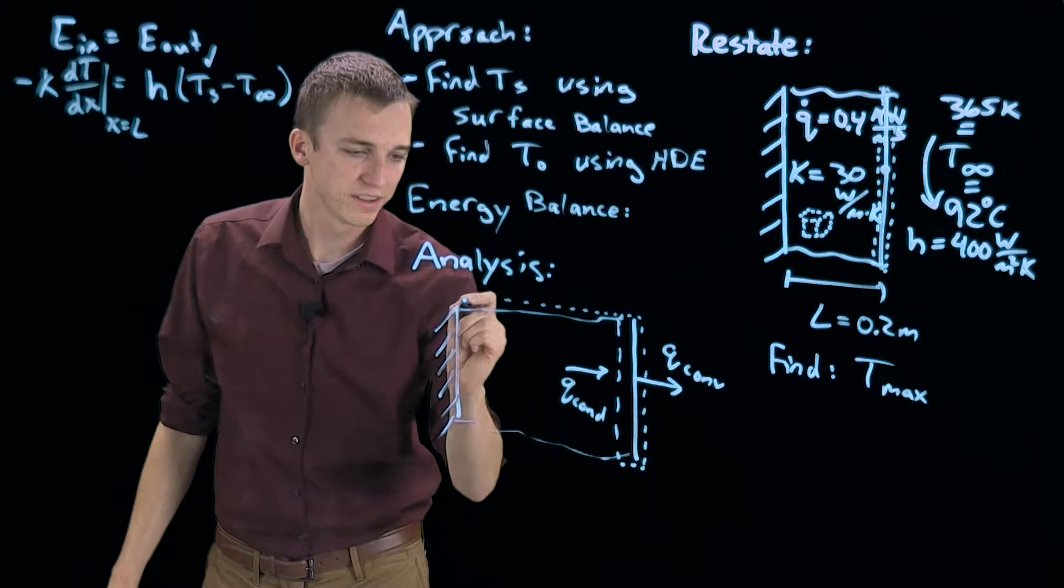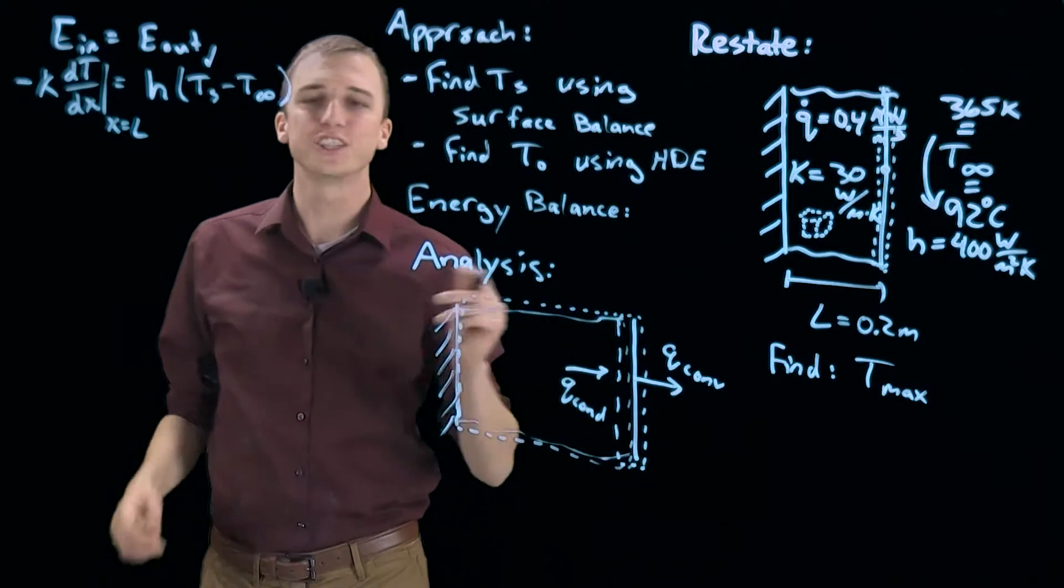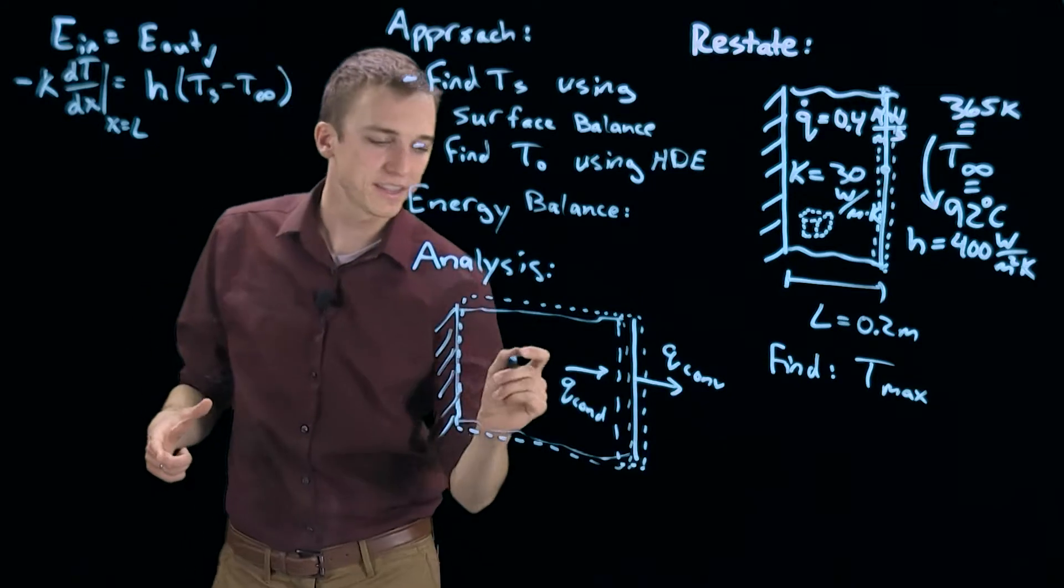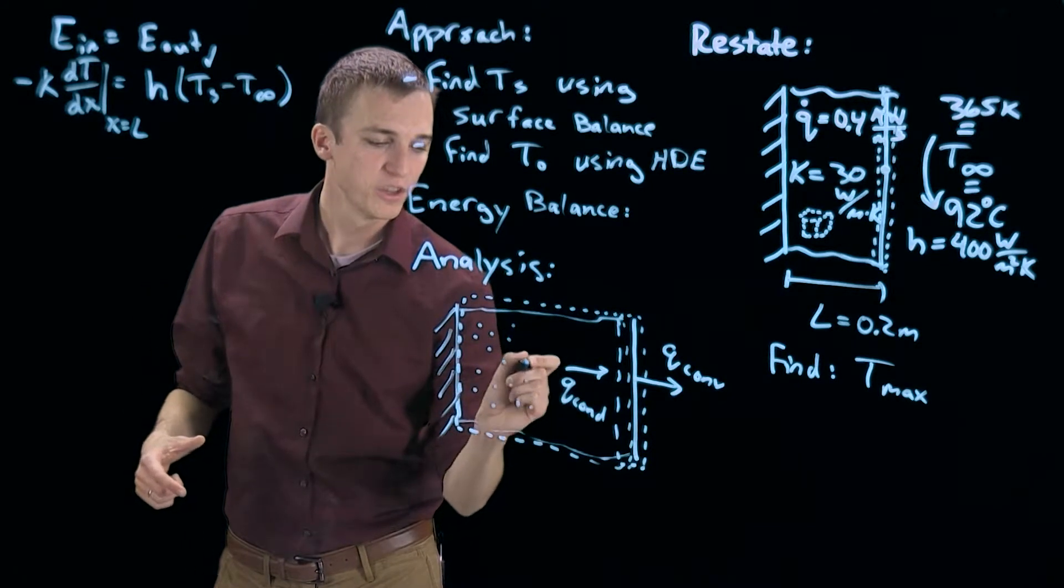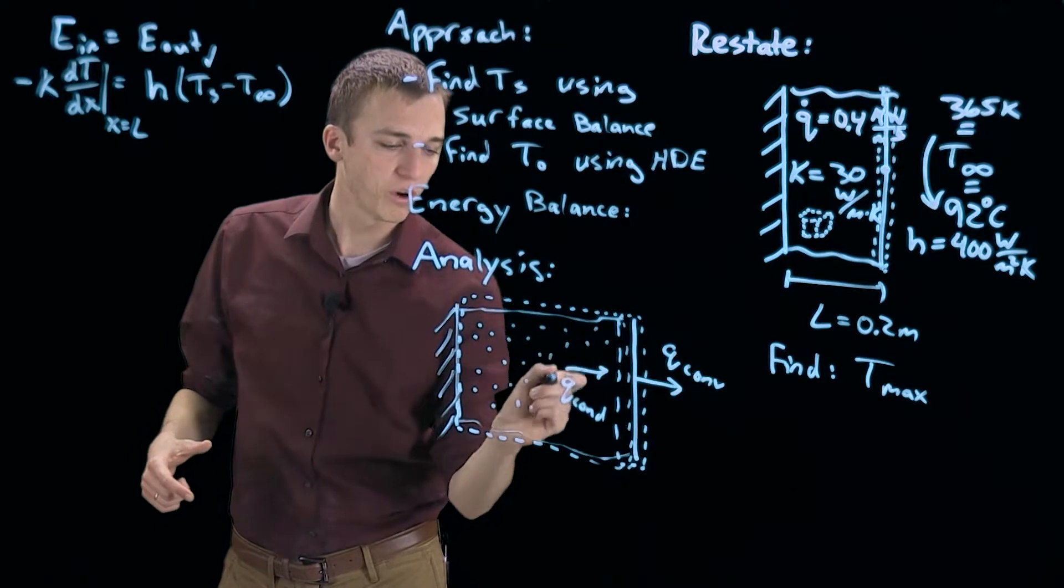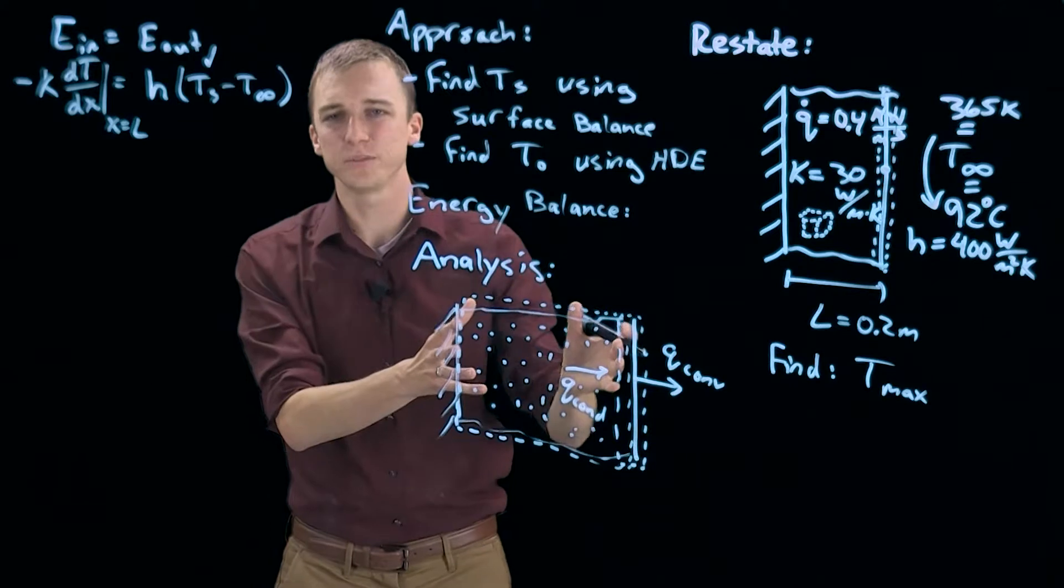Let's real quick look at this control volume being the entire wall. In this case there is energy being generated, which I'll draw these little dots throughout this wall. So let's say every second five joules of energy is being generated here.